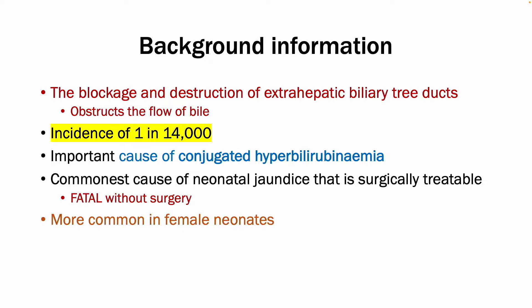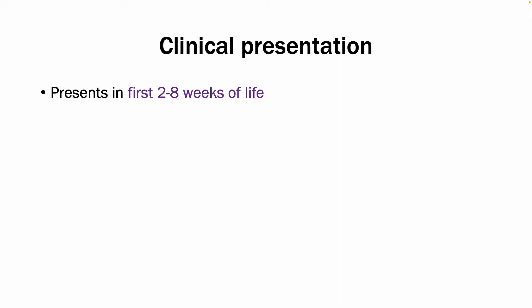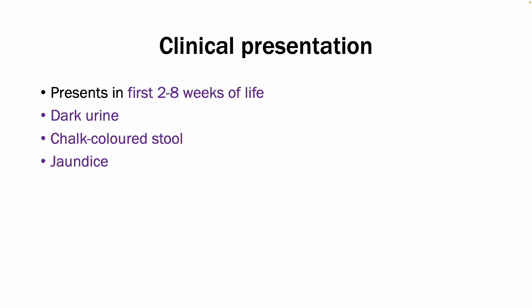In terms of risk factors, it tends to be more common in female neonates. With regards to clinical presentation, it tends to present within the first eight weeks of life. The key triad to look out for is dark urine, chalk-colored stools, and jaundice — the classic descriptive symptoms of obstructive jaundice. Other features include abdominal distension, bruising, and failure to thrive.